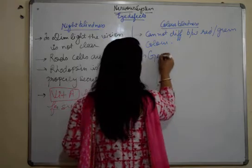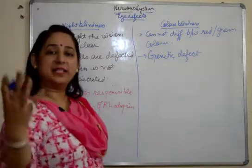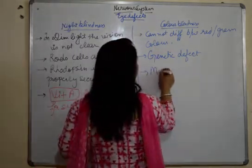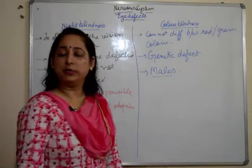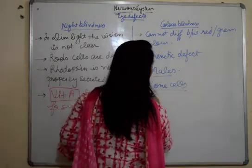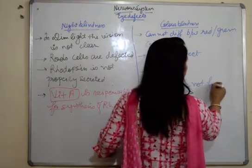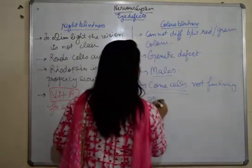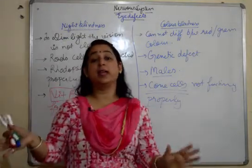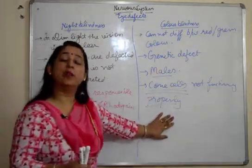Color blindness is a genetic defect, meaning it comes from the parent. If the father is suffering from color blindness, the son has around 90% chances of also suffering from it. It is mainly found in males. Here, cone cells play a role — cone cells do not function properly. Because cone cells are present in the retina and are responsible for colored vision, that is why we can see colors.